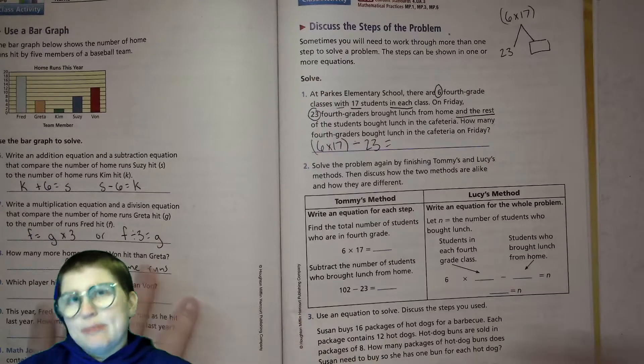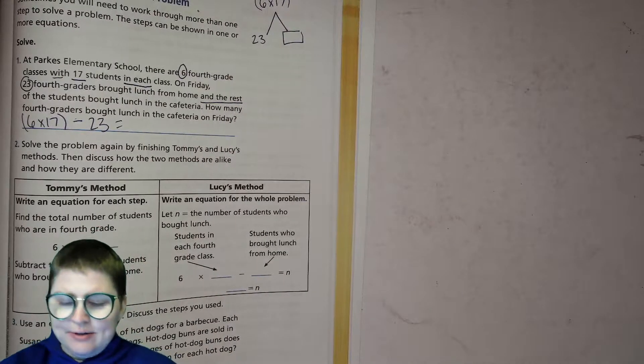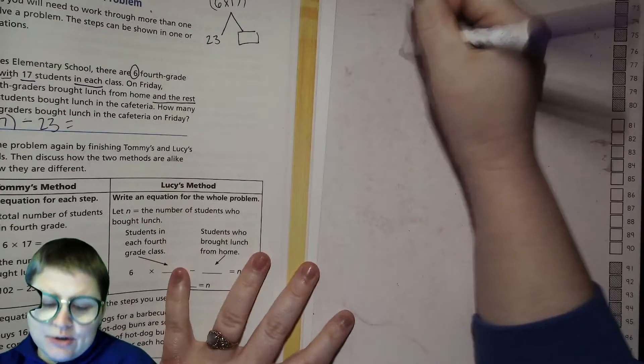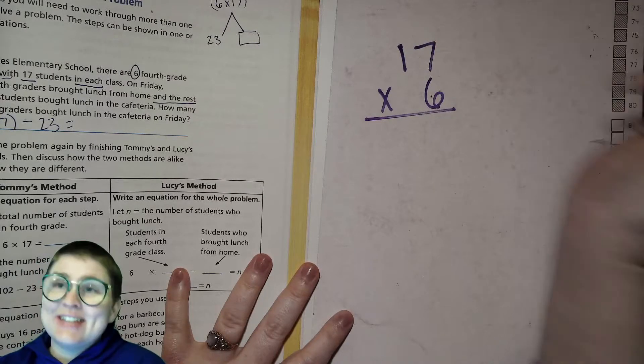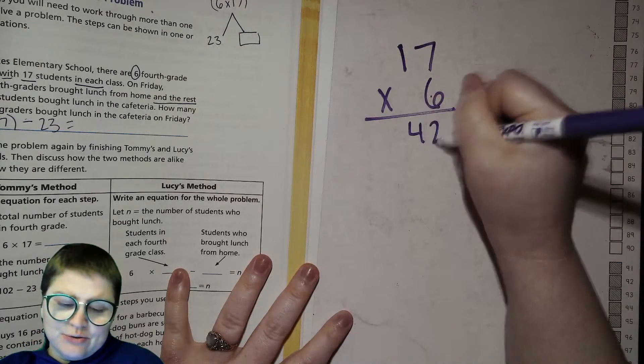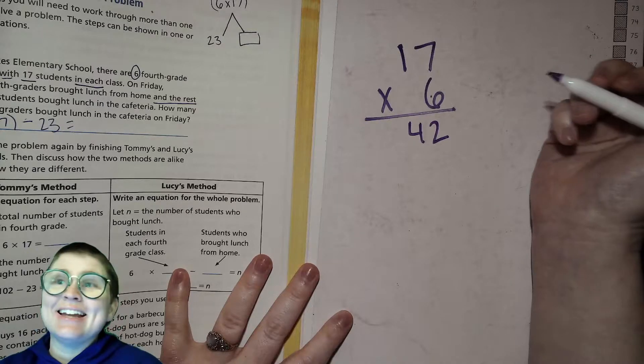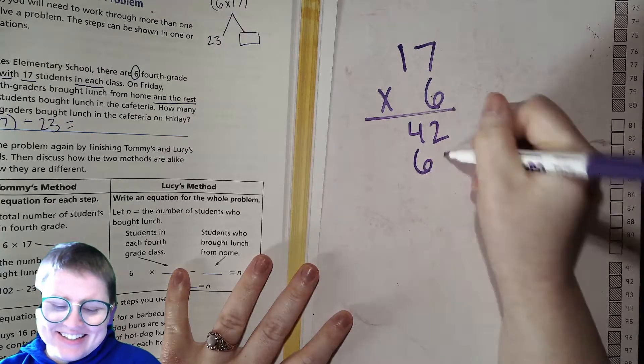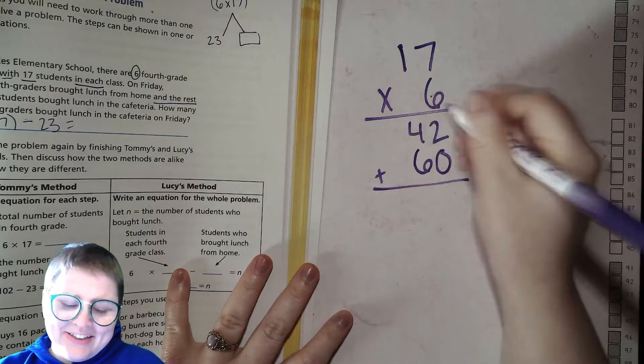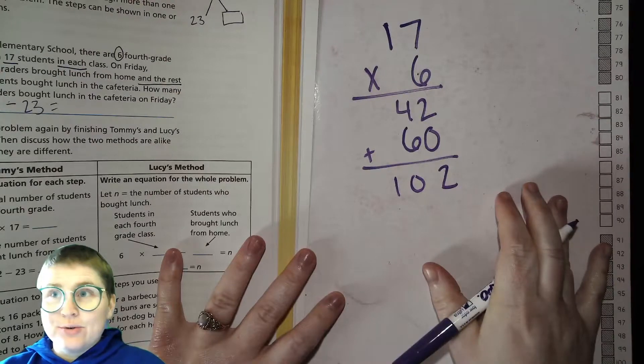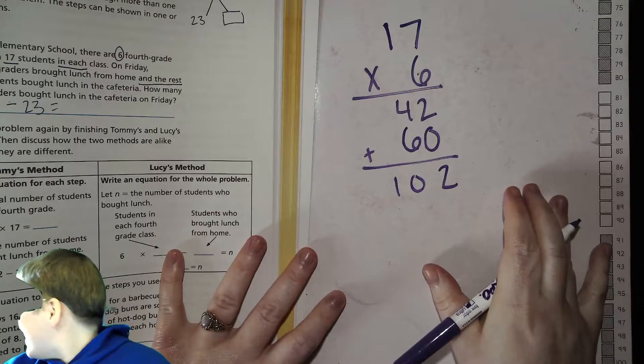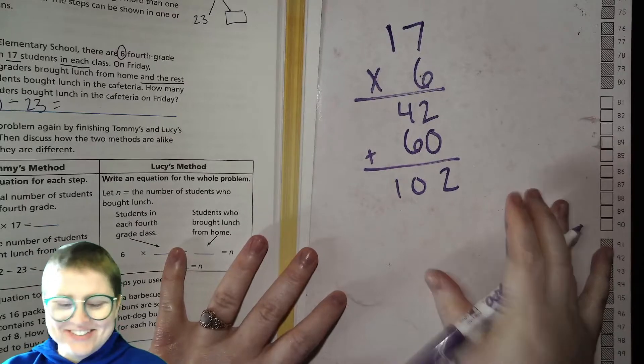Take out my whiteboard so I have space to work it out. You might hear some rain in the background. It's raining for me over here. So 17 times 6, 6 times 7 is 42, and 6 times 10 is 60. Add those up and you get 102. So there's 102 total kids. Oh, it's hailing.